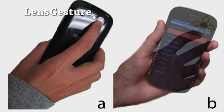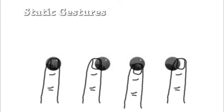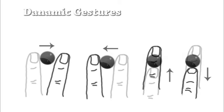We present Lens Gesture, a pure software approach that allows users to interact with mobile devices through their index finger. The user can make different finger gestures on the lens of the back camera to trigger different operations on the device. Lens Gesture includes both static and dynamic gestures. Static gestures obscure the lens entirely or partially, while dynamic gestures include moving the finger horizontally or vertically across the lens.